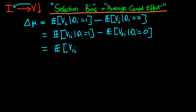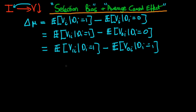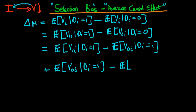First of all we've got the expected value of v1i given that di equals 1. What I'm going to do is subtract from that the expected level of v0i given that di equals 1, and because I've taken it away I'm now going to add it back, so that overall I've added nothing to the system. So I've got plus the expected value of v0i given that di equals 1, minus the expected level of v0i given that di equals 0.